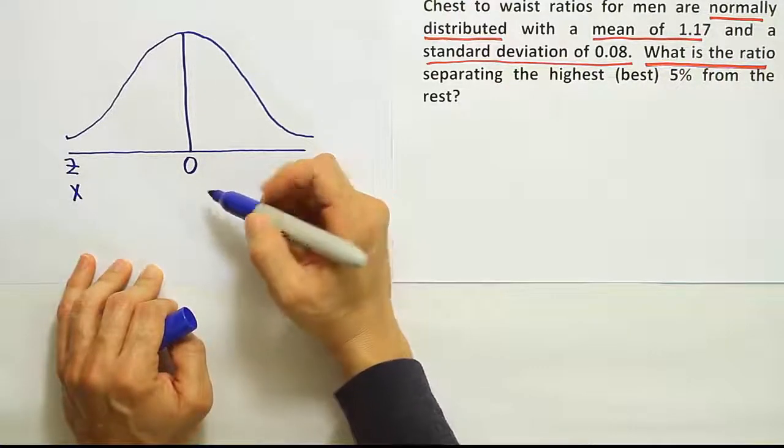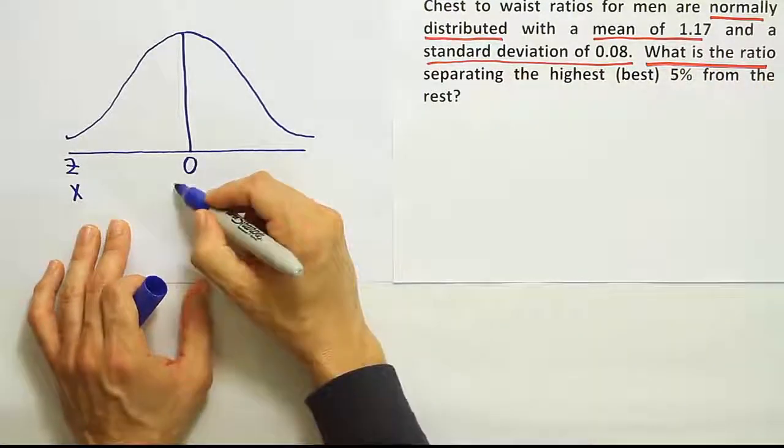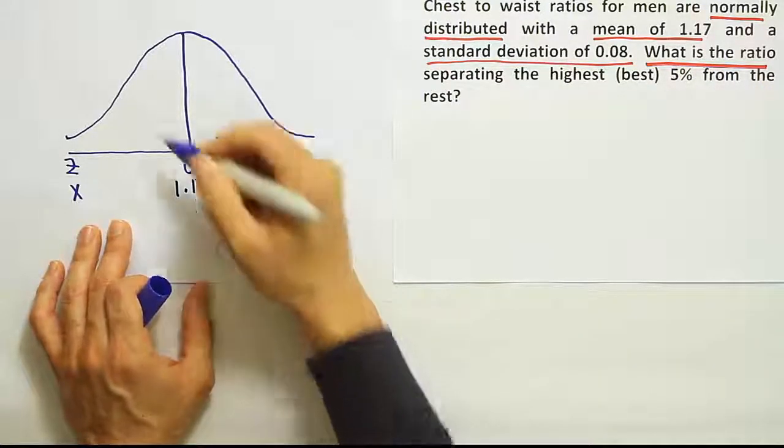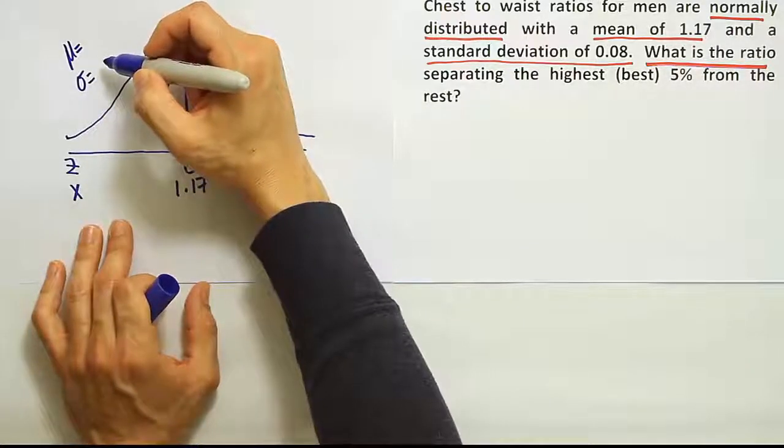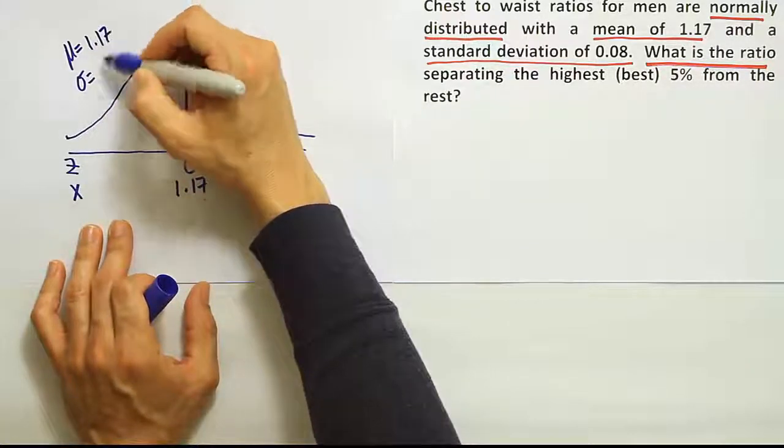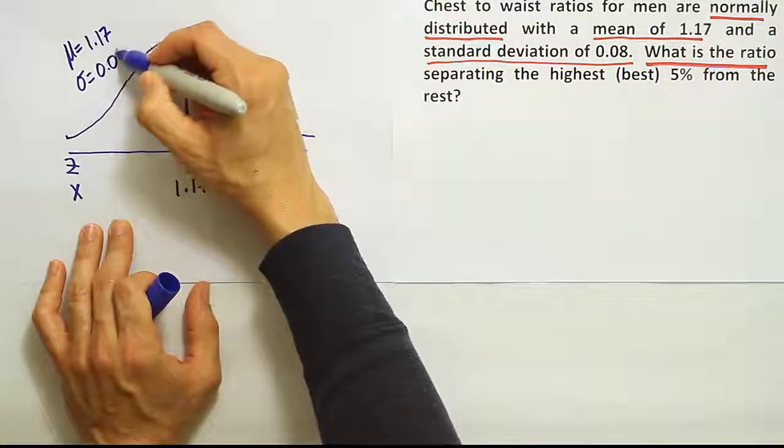The z-axis is always centered at 0. The x-axis is centered where the mean is. That's going to be 1.17. I'll place the mean in the upper left-hand corner along with the standard deviation for quick reference. So 1.17. Standard deviation is given as 0.08.